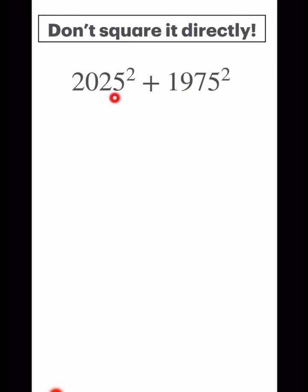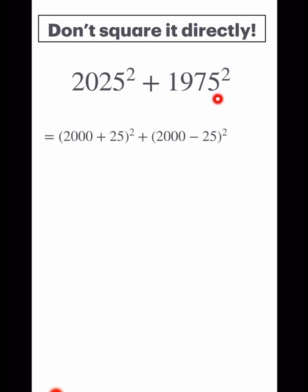First, rewrite the numbers: 2025 is 2000 plus 25, and 1975 is 2000 minus 25.